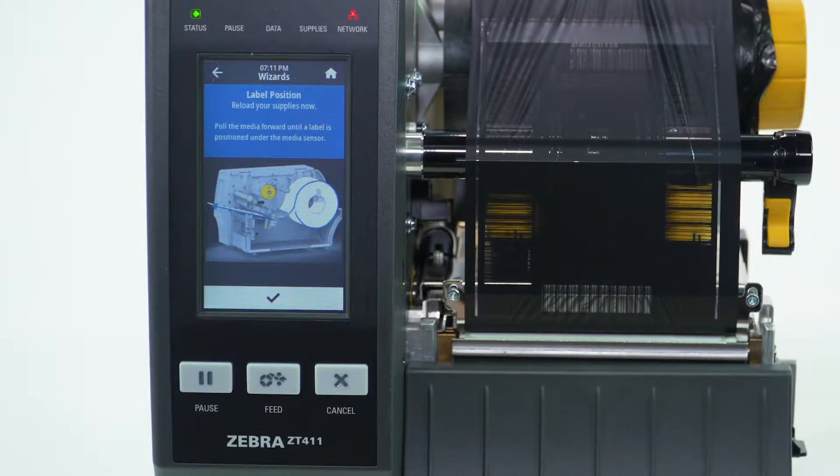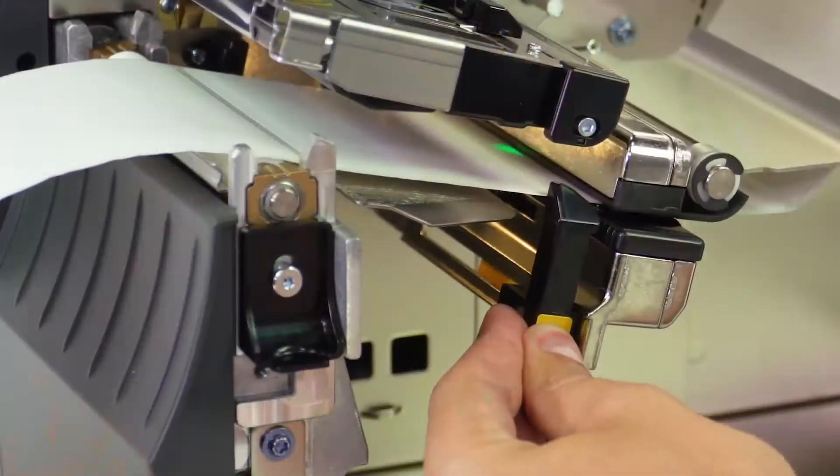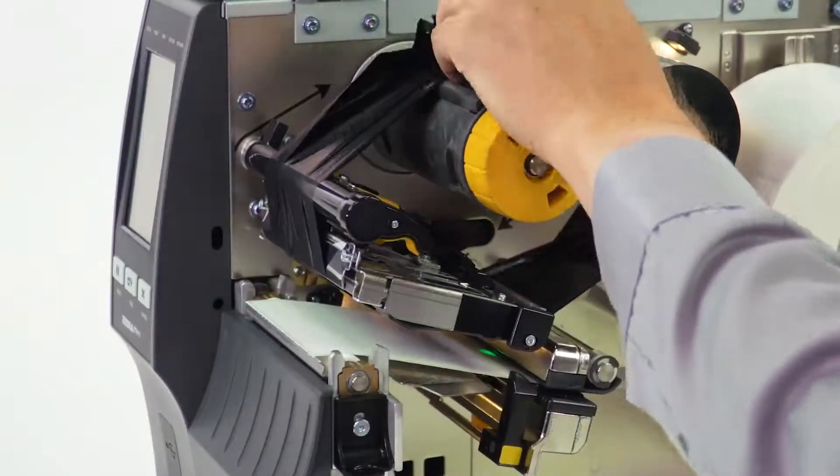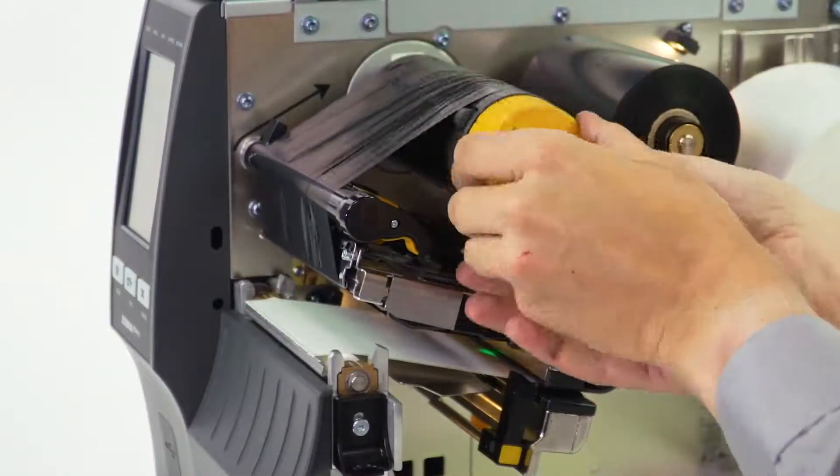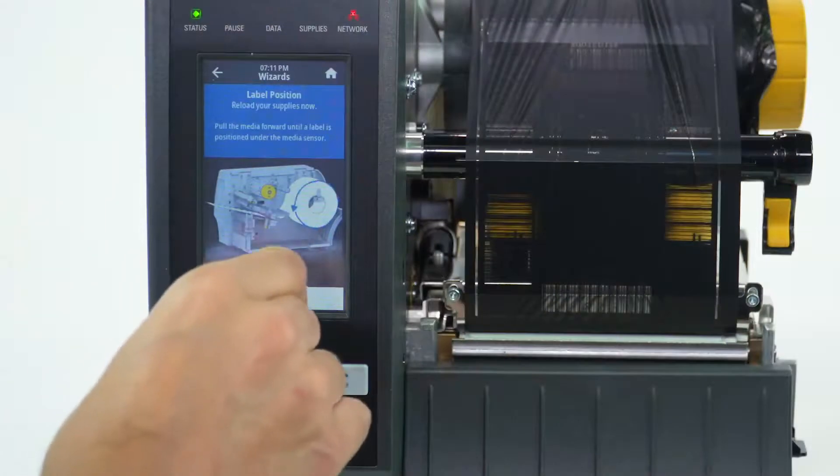Load Media. Hold the media forward until a label is positioned under the media sensor, then select Check.